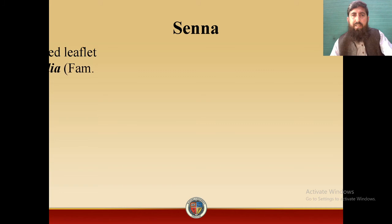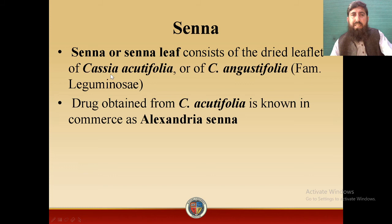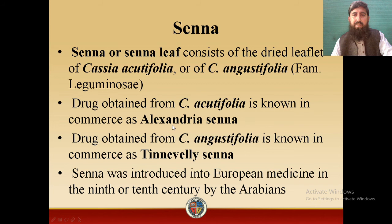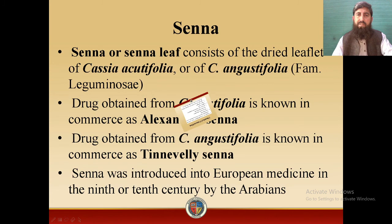The last drug included in anthraquinone glycosides is Senna, also known as Sanamaki in Urdu. Senna leaf consists of the dried leaflets of Cassia acutifolia or Cassia angustifolia, family Leguminosae. Drug obtained from Cassia acutifolia is known in commerce as Alexandria senna, and drug obtained from Cassia angustifolia is known as Tinnevelly senna. Senna was introduced into European medicine in the 9th or 10th century by Arabians.